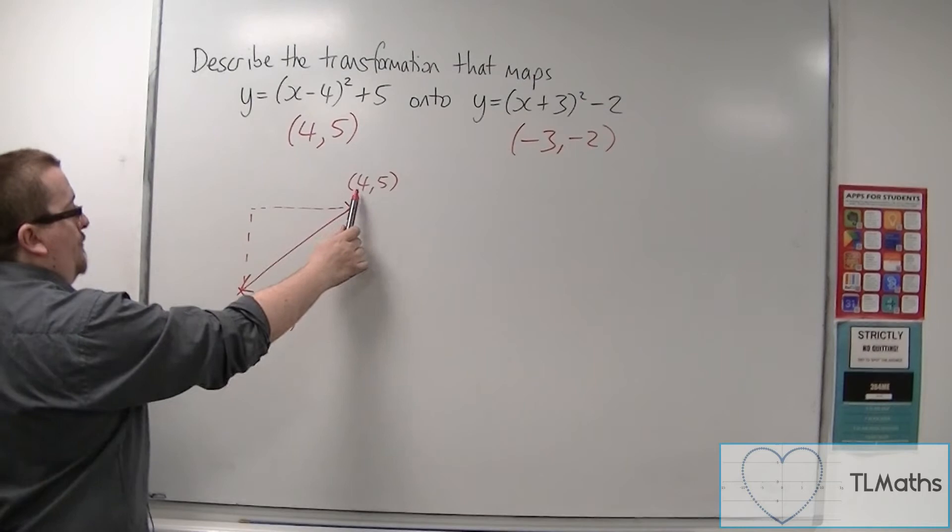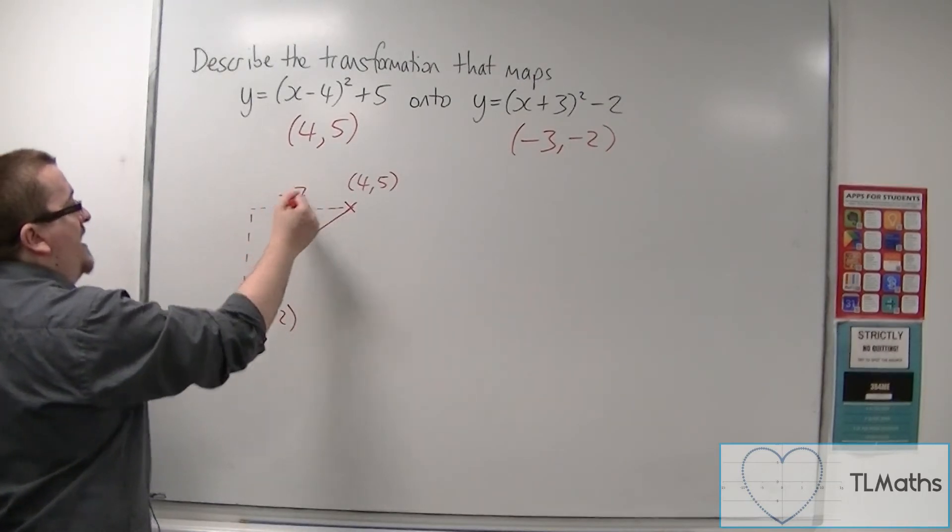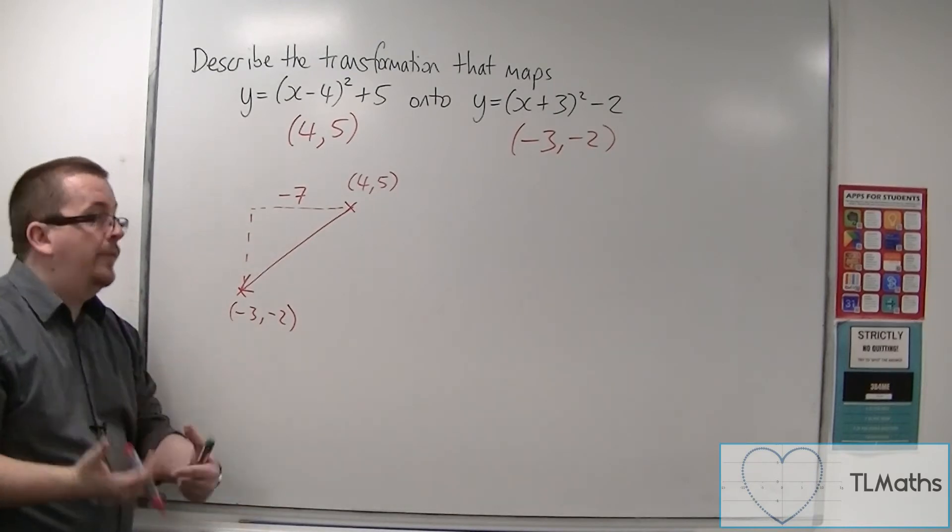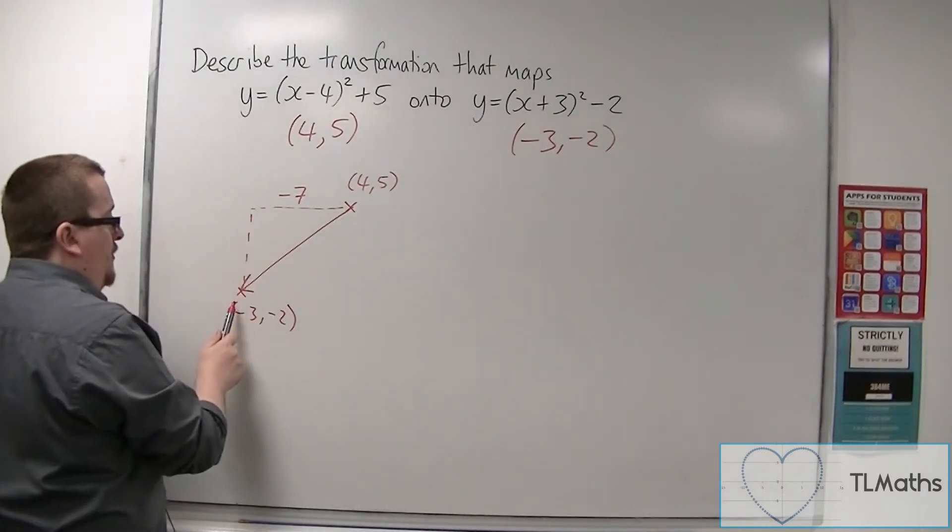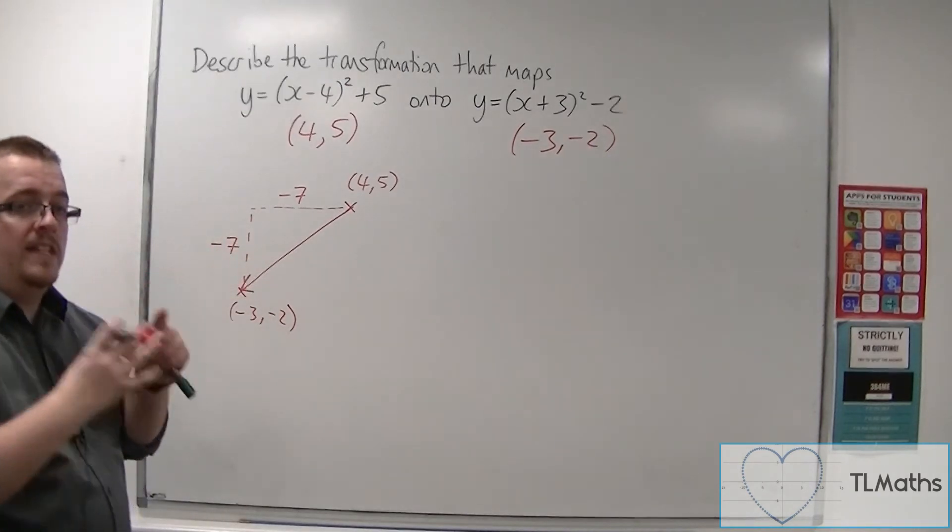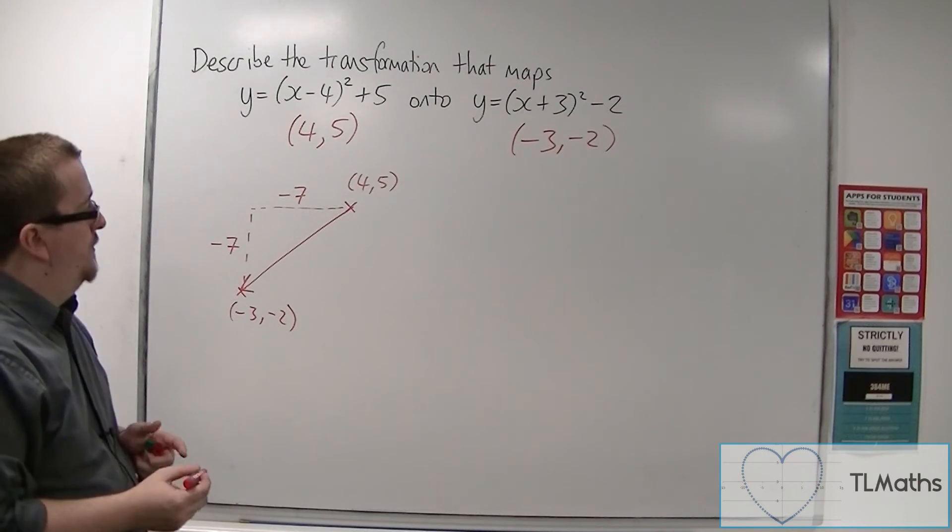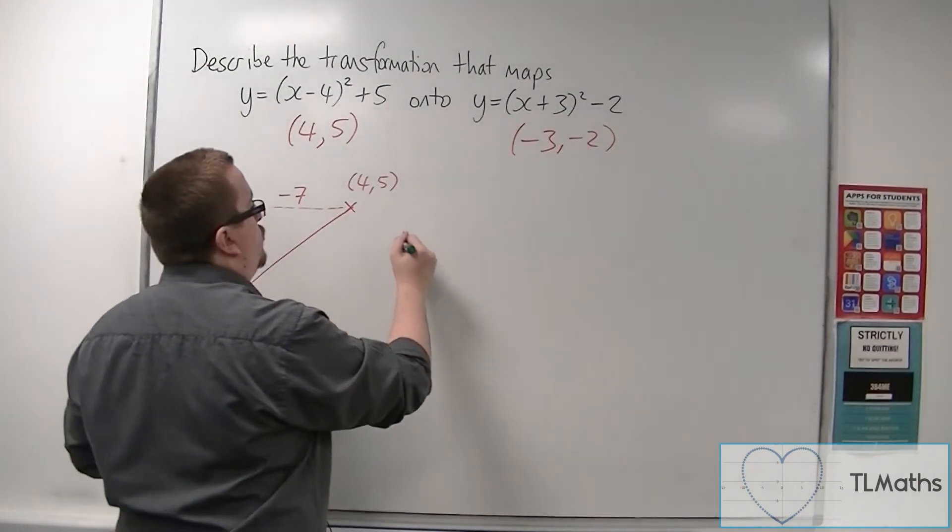So to get from 4 to minus 3, I must go in the x direction by negative 7. And to get from 5 to minus 2, I must also go in the negative y direction by minus 7. And so the transformation is a translation